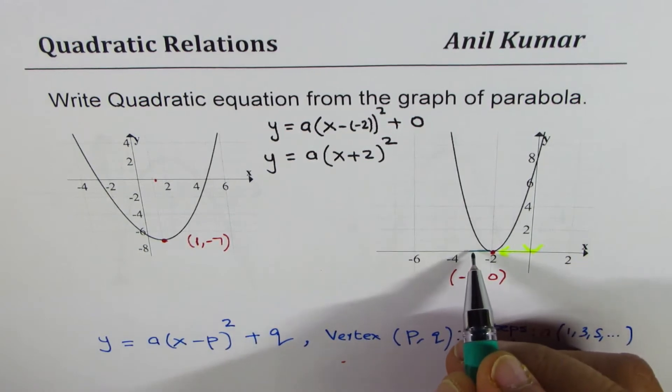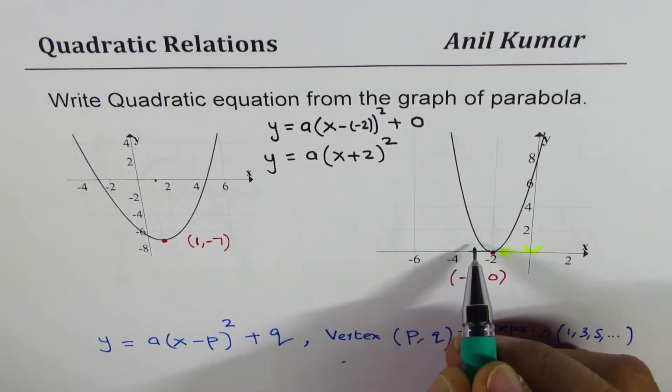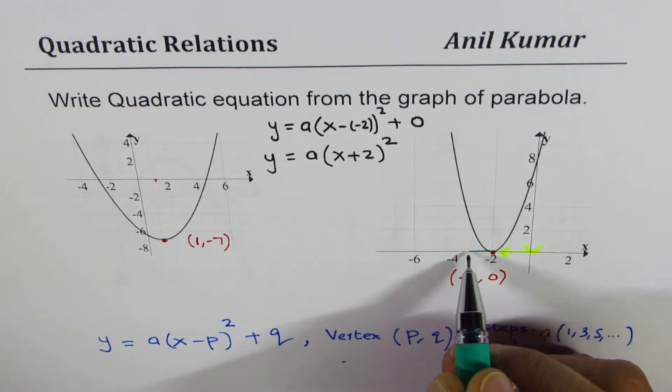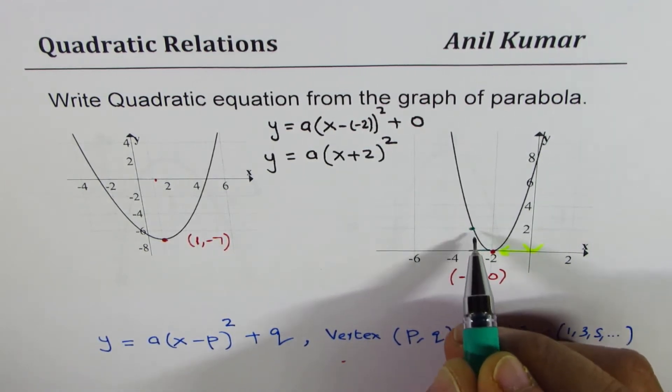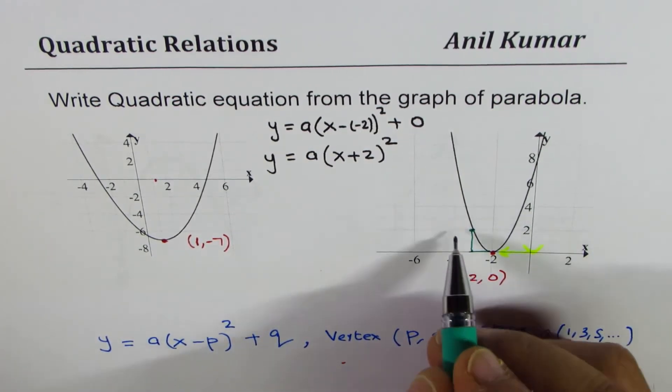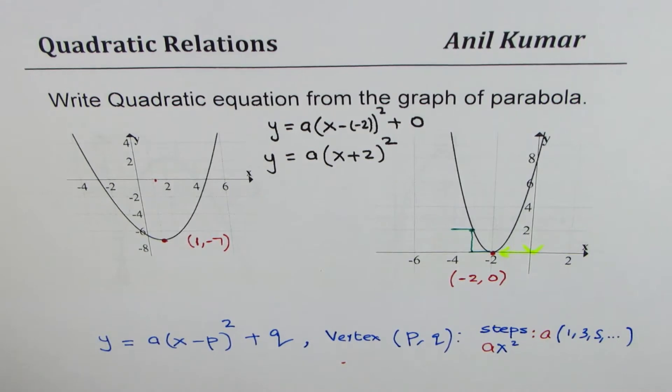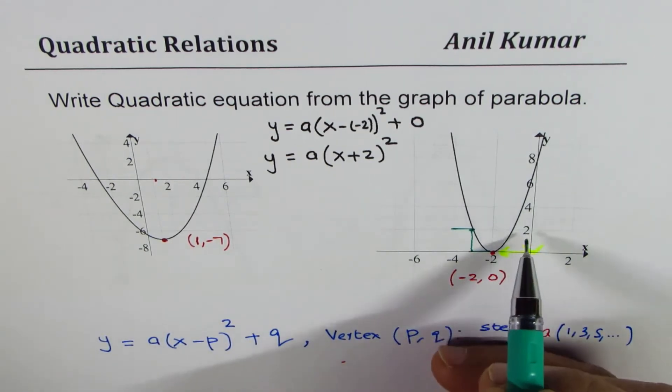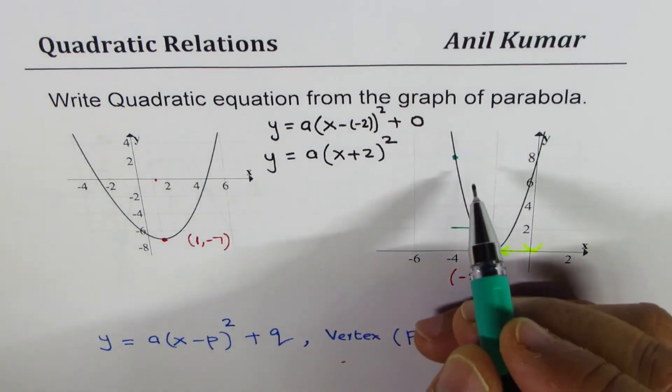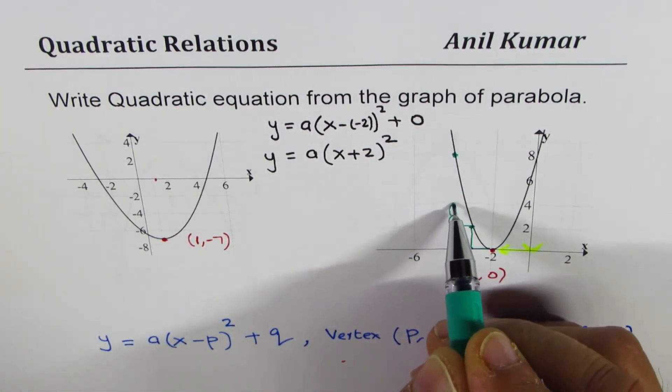If I move one unit away, that means from minus 2 to minus 3, how much upwards do I have to go? So the next point will be at 3 here, so I'm going two units up. And if I move one more unit away, how many units do I go up?